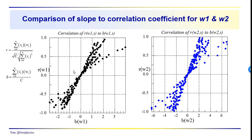So if we look at the results, one key question is: is the slope going to be a good proxy for the correlation coefficient? We've seen that the correlation coefficient has an additional term — the square root of the sum of squared amplitudes in the denominator — so we'd expect some difference. Both terms would converge toward zero as the slope and correlation coefficient both approach zero.